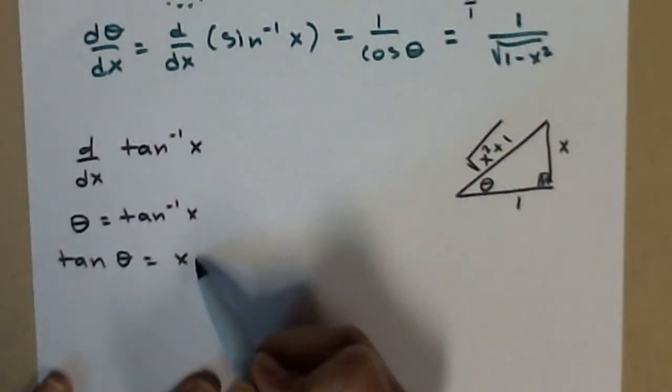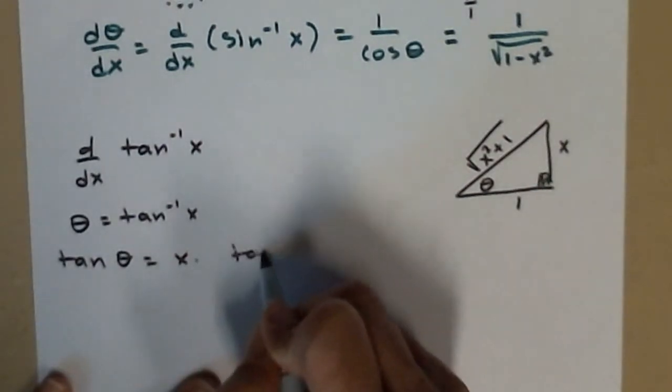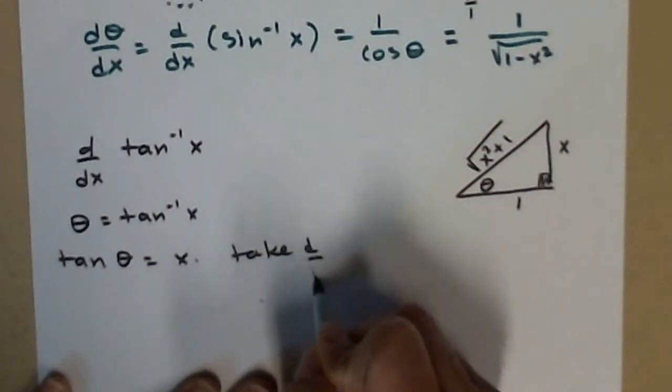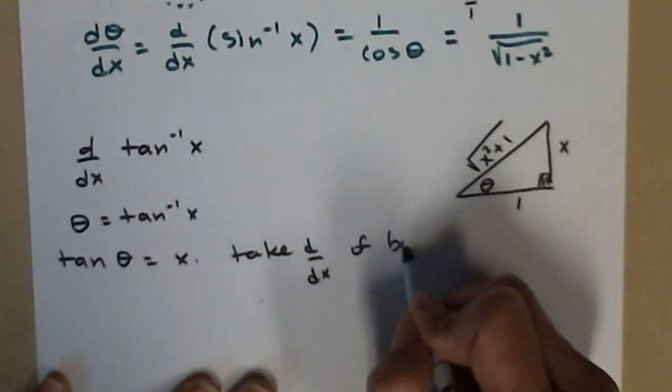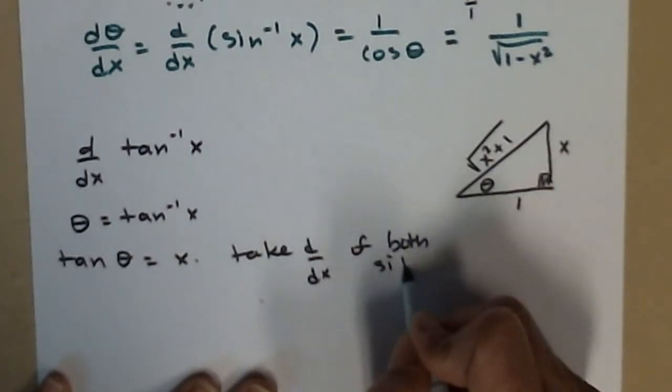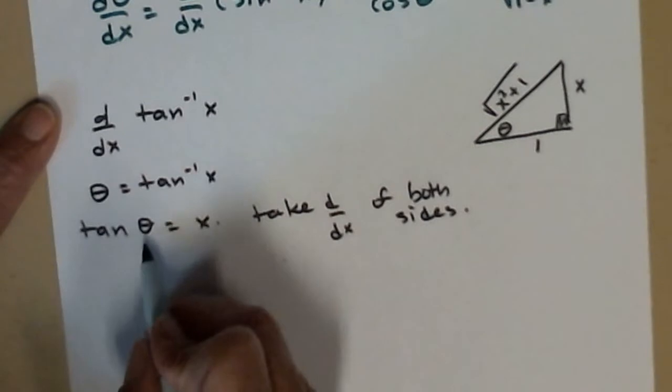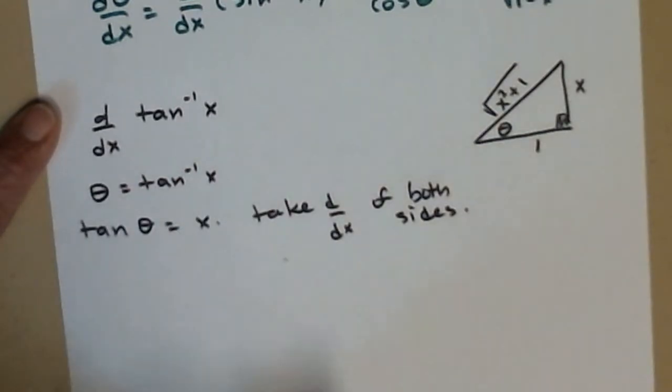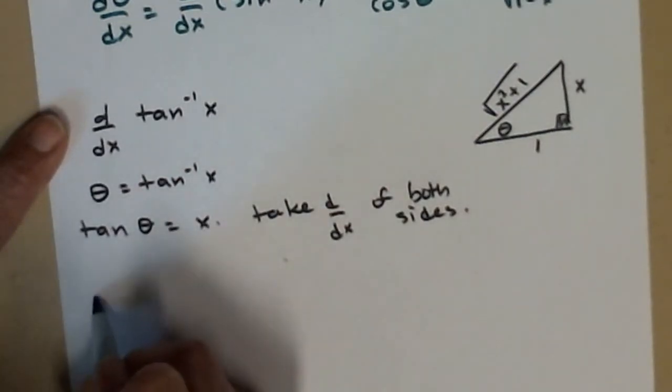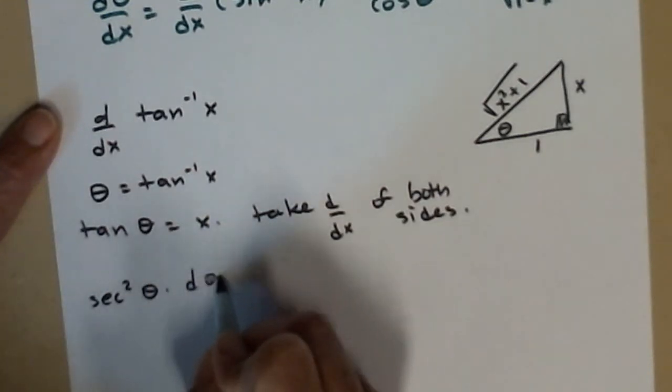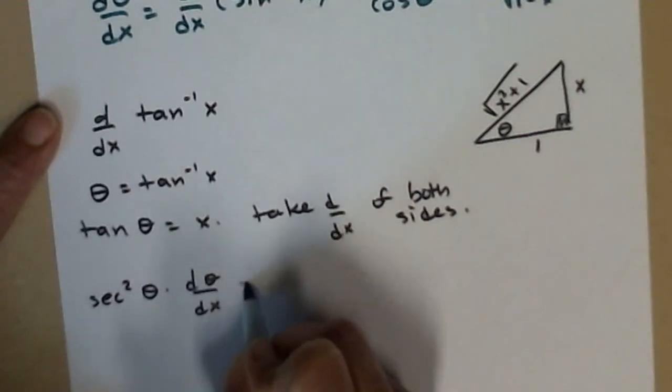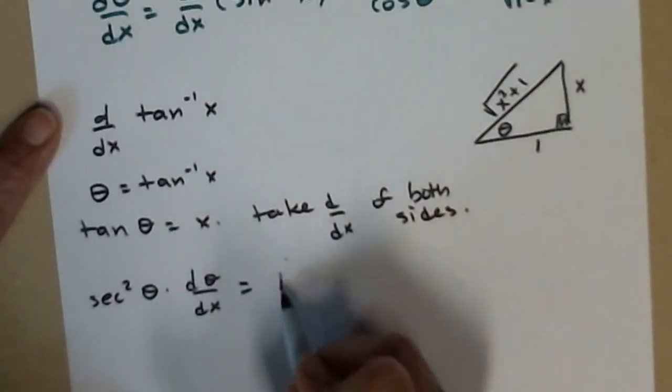Take the derivative here. So I have the derivative of the tangent of theta. Remembering that theta is a function of x, so tangent is secant squared theta times dθ/dx. There's the part I need. dx/dx is 1.